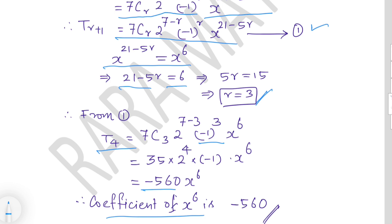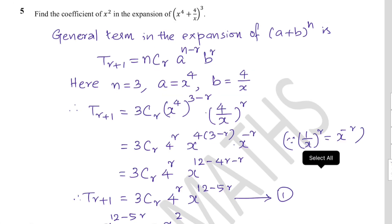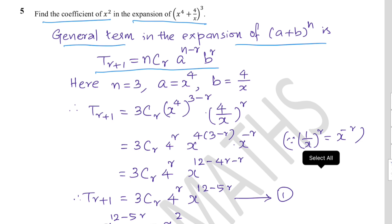Example 5: Find the coefficient of x² in the expansion of (x^4 + 4/x)^3. Here n = 3, a = x^4, b = 4/x. Substituting into the general term: T(r+1) = 3Cr · (x^4)^(3−r) · (4/x)^r. Collecting constants: 3Cr · 4^r.